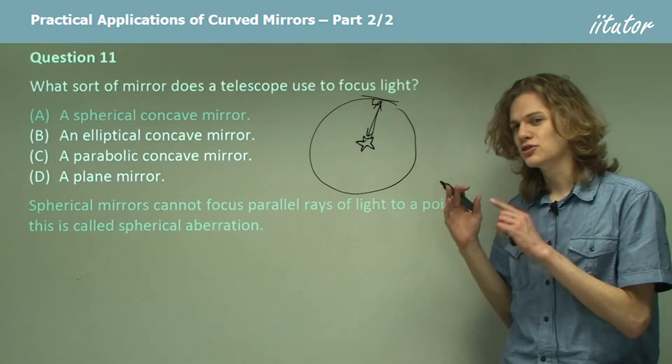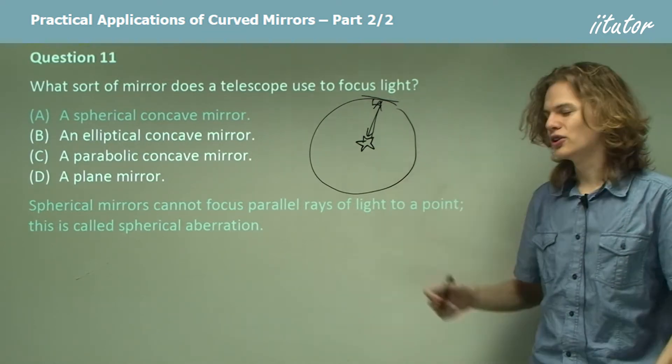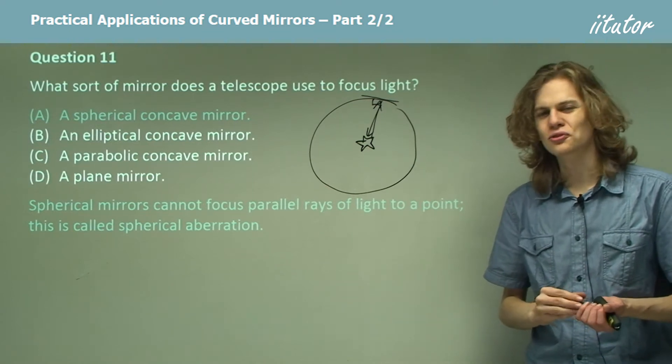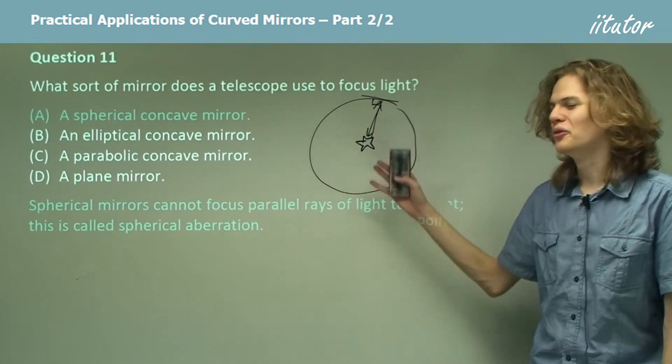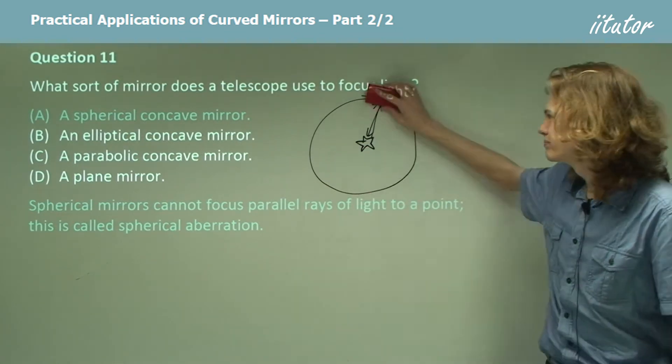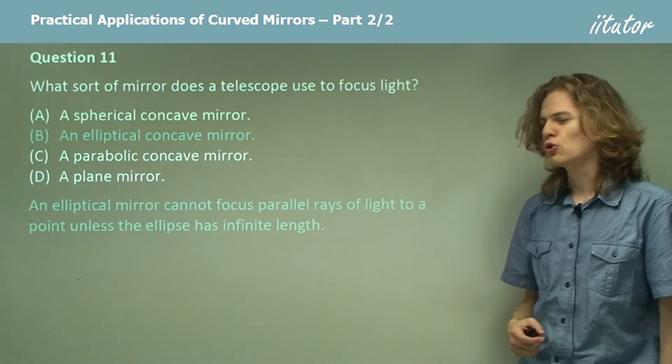So this is the only case in which a light source can be reflected by a spherical mirror into a single focus, if the light source is at the location of the focus. So our answer is not A, because we can't build a mirror around the star that we're trying to look at. Alright, how about B, an elliptical concave mirror?